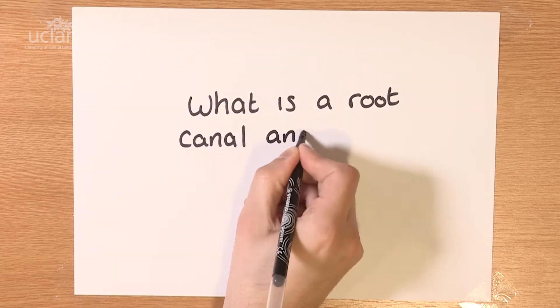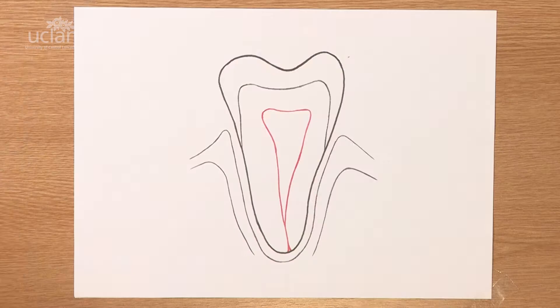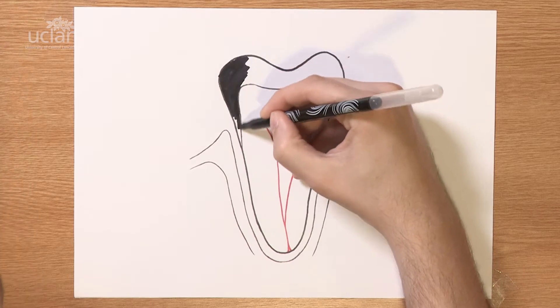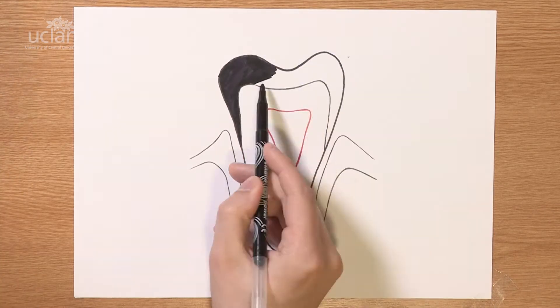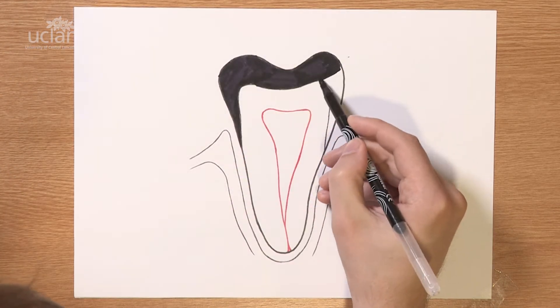So what is a root canal and how is it treated? We first need to look at what a tooth is made of. Our teeth have layers, with the outermost layer,